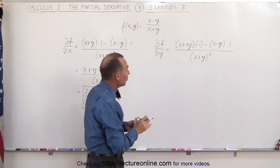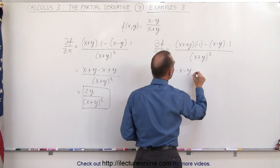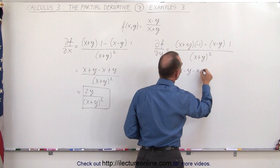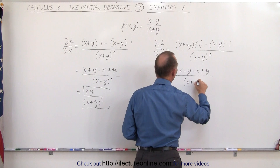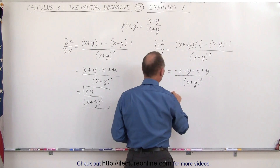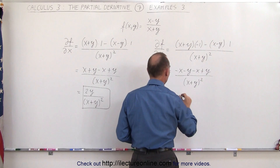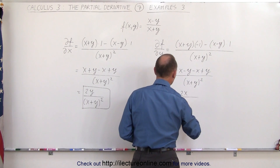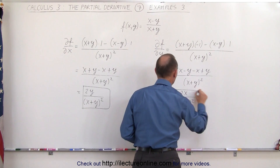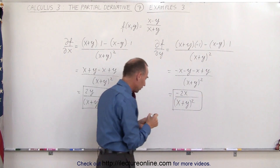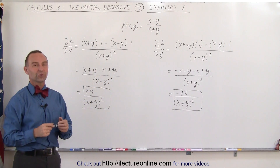We have to simplify the numerator. This is equal to minus x, minus y, minus x, and plus y, all divided by the quantity x plus y squared. Simplified, notice that minus y plus y cancels out, giving minus 2x divided by x plus y quantity squared. And this would be the partial derivative of the function with respect to y. And that's how we use the quotient rule using partial derivatives.